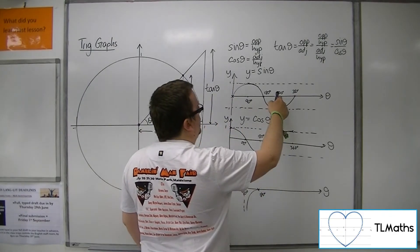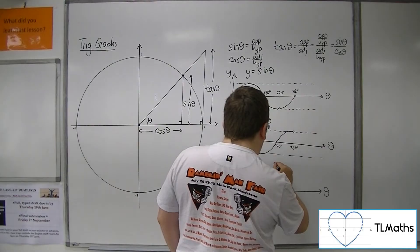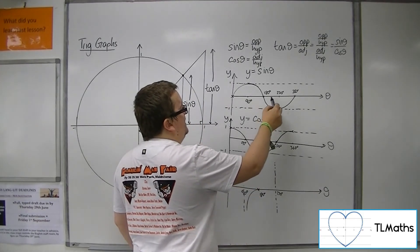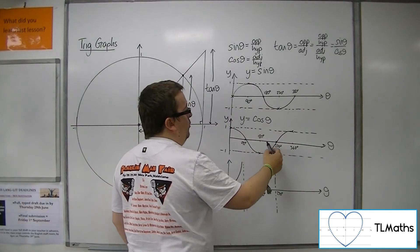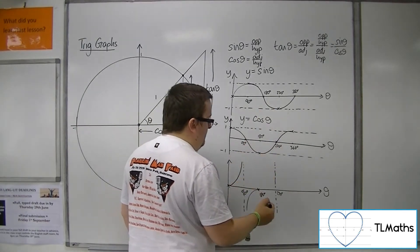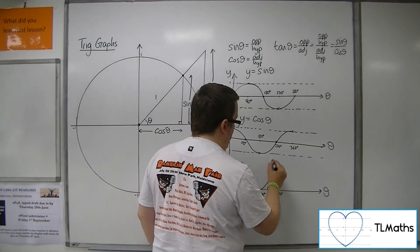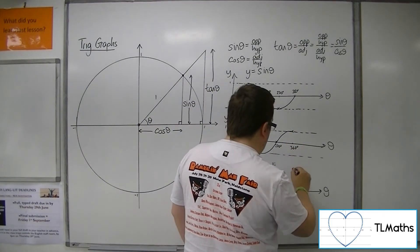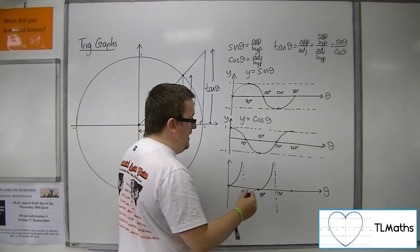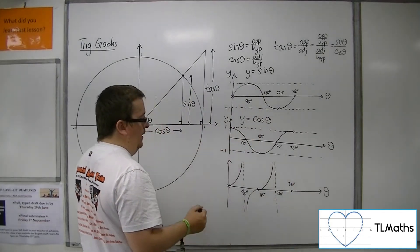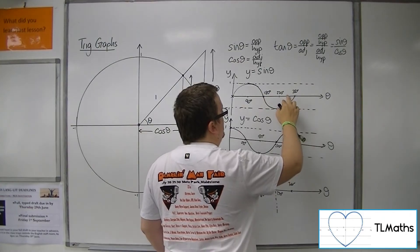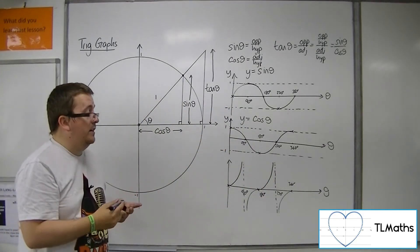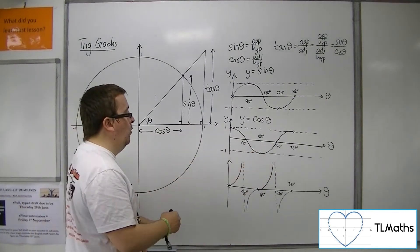Between 90 and 180 you've got a positive number divided by a negative number, so tan must be negative, and the curve approaches the asymptote from below. At 270 we've got minus 1 divided by 0, so there must be another asymptote at 270. Sine is negative between 180 and 270, cos is negative between 180 and 270, so negative divided by negative is positive — the curve approaches the asymptote from above. At 360 we've got 0 over 1, so we go through 0, and between 270 and 360 — negative divided by positive — the curve is negative. That's what the tan curve looks like: y equals tan of theta.